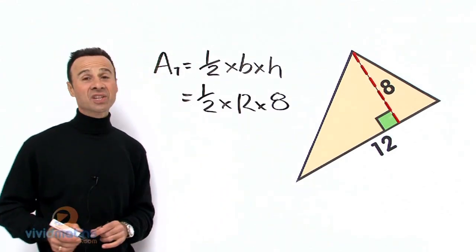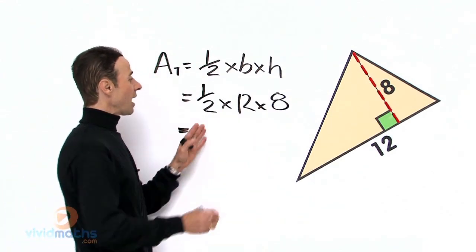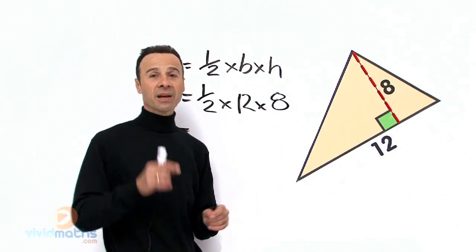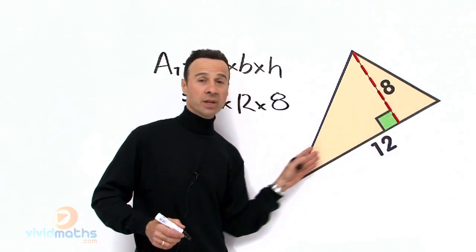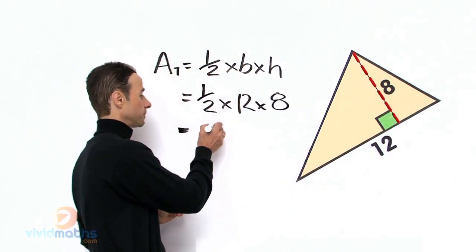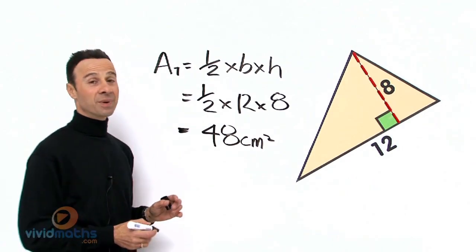Now all units for this particular example are in centimeters. So let us work this out: a half times 12 times 8 in your calculator will yield a grand total of the area here inside this triangle, 48 centimeters squared.